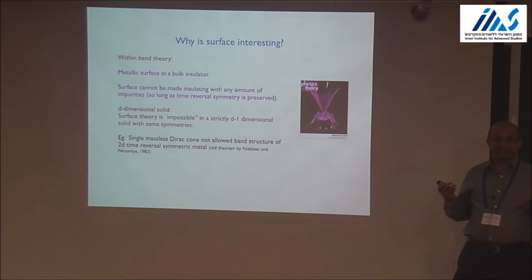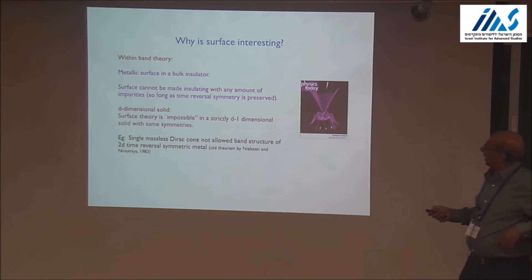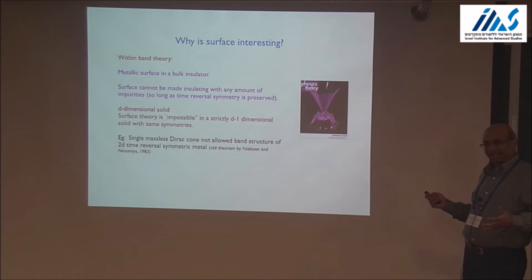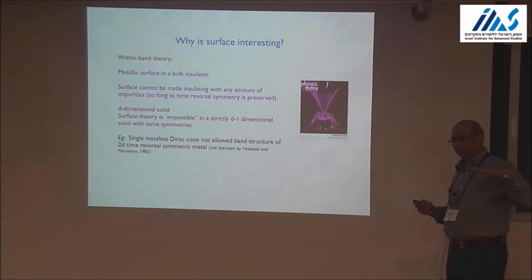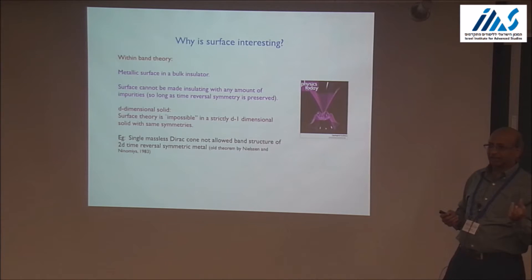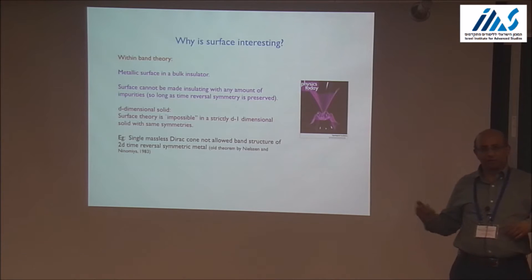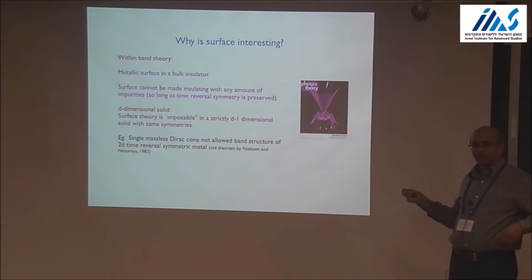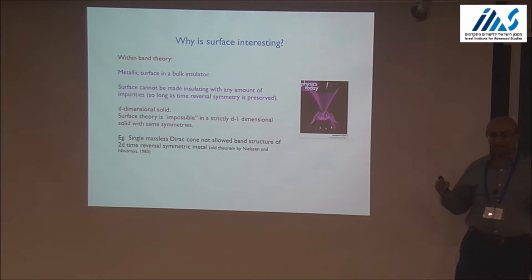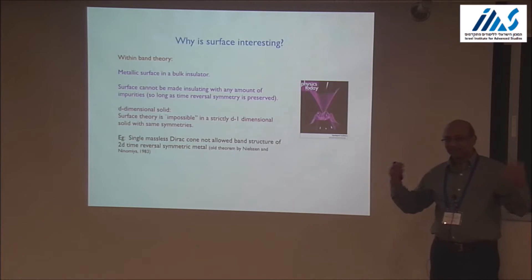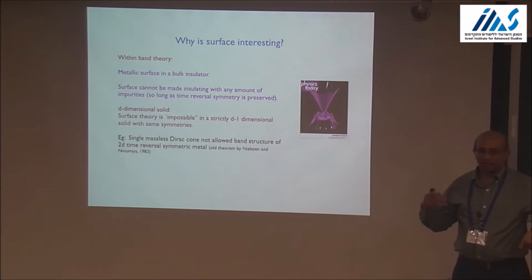Why is such a surface interesting? Insulators with metallic surface states are well-known in solid state physics. But the metallic surface state of the topological insulator is very weird: unlike any other metal, if you take a metal and make it dirty, impurities scatter the electrons and eventually localize them, making the system an insulator. Here, you cannot make the surface insulating with any amount of impurities, in the free fermion approximation, so long as you preserve the symmetries — in particular, time reversal symmetry. It's a very robust metallic surface, and the metallicity is protected so long as impurities preserve time reversal invariance.